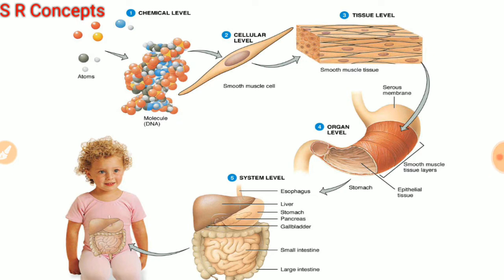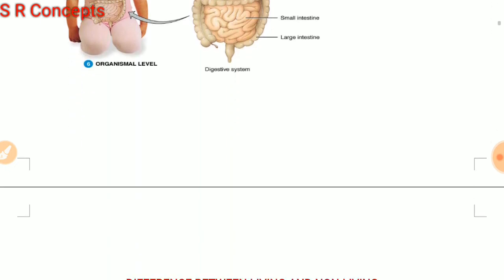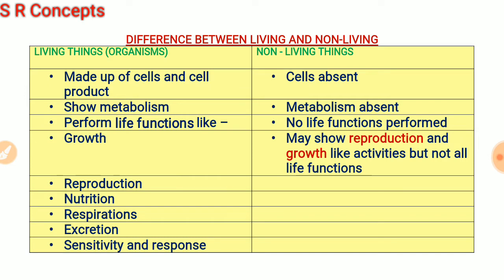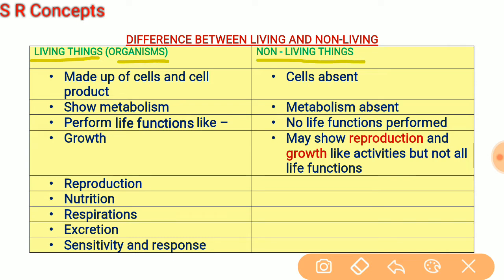Now let's move on to a very important topic: the difference between living and non-living things. Living things are also called organisms. Note that we should never use the term 'non-living organisms.' Here are the features of living organisms: they are made up of cells and cell products, they show metabolism, and they perform life functions.